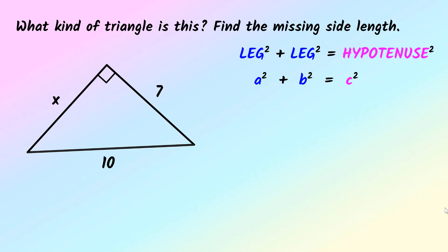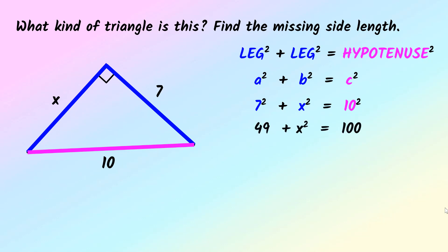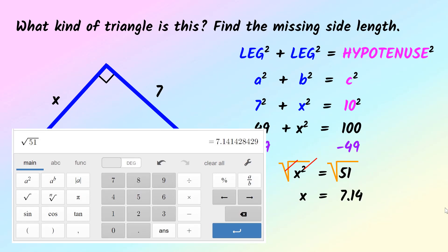Let's identify which sides are the legs and which is the hypotenuse. Seven is a leg, X is a leg, and ten is the hypotenuse. Remember, it doesn't matter which leg is A or B as long as the hypotenuse is always C. So seven squared plus X squared equals ten squared. Seven squared is 49 and ten squared is 100. I need to isolate X squared by subtracting 49 on both sides. Then to get X, not X squared, I square root both sides. The square root of 51 — let's try it in the calculator. 51 is not a perfect square, so the answer is a decimal rounded to two decimal places: 7.14.